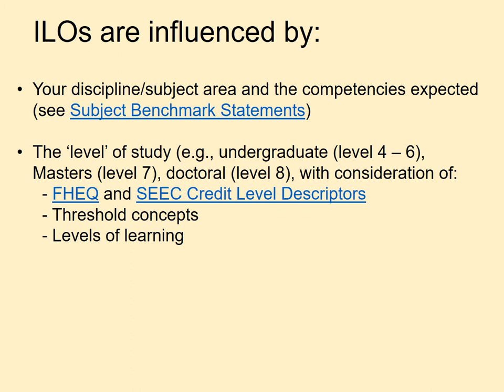It's also important to consider where a student is in their study. ILOs for a first year would look quite different from those of a final year undergraduate student, and those for an undergraduate would look quite different from those of a postgraduate. This is related to, among other things, students needing to grapple with increasing numbers and complexities of threshold concepts — core ideas and frameworks that open up the discipline to newcomers, for example evolution in biology. It's also associated with different levels of learning, which is a concept we'll return to in a moment.